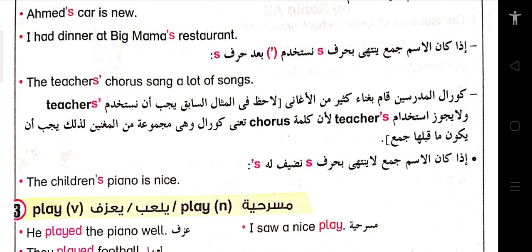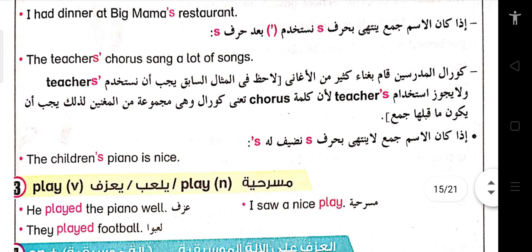كلمة play يمكن استخدامها كـ verb وكـ noun. كلمة play إذا جاءت مع أي آلة موسيقية يبقى معناها يعزف، وهي كمان بمعنى يلعب. Example: He played the piano well. They played football. And if we use the word play as a noun يبقى معناها مسرحية. Example: I saw a nice play.